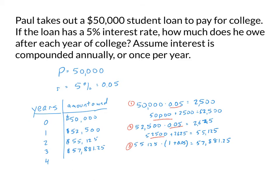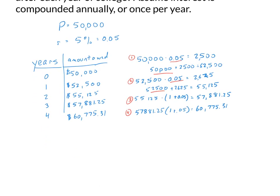For our fourth year, we do the same thing one more time. We take $57,881.25 and multiply by 1.05. That gives us $60,775.31 — rounded to the nearest cent. So after four years of college, our student loan balance has grown from $50,000 up to almost $61,000.